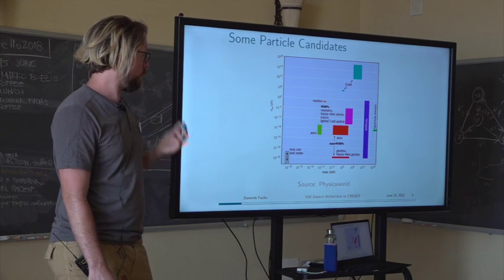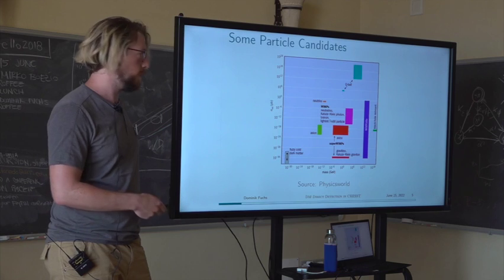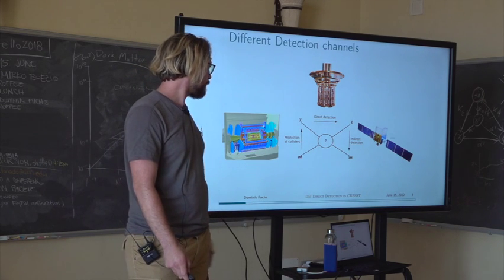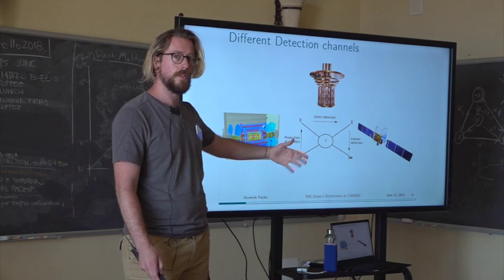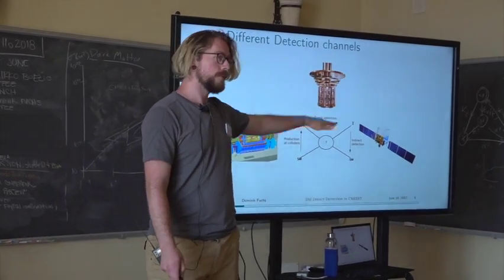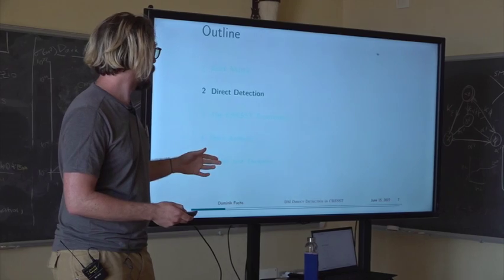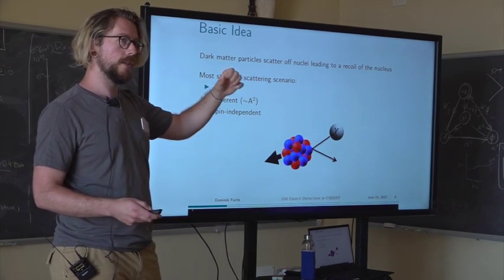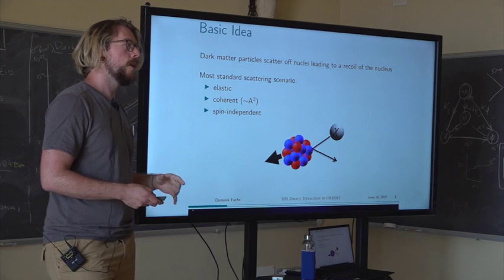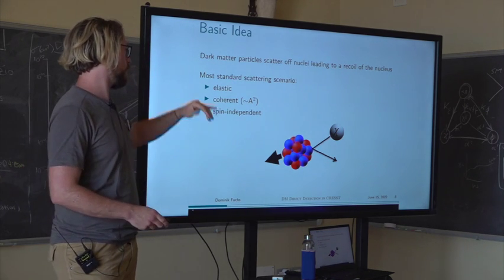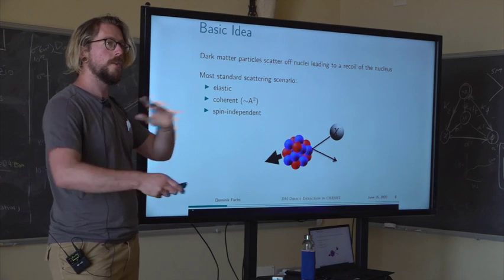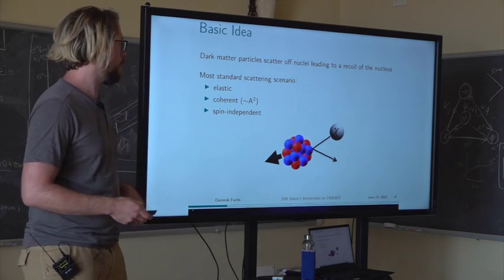To try to detect these, one can divide detection mechanisms into three main categories: the production of dark matter at colliders, looking for an annihilation signal in telescopes or satellites, and the direct detection approach I'll focus on, which looks at scattering. The basic idea is a dark matter particle scattering on a nucleus and leaving some recoil energy in that nucleus. The simplest picture is elastic coherent scattering in the spin-independent case, though each of those assumptions can be exchanged for something more complicated.